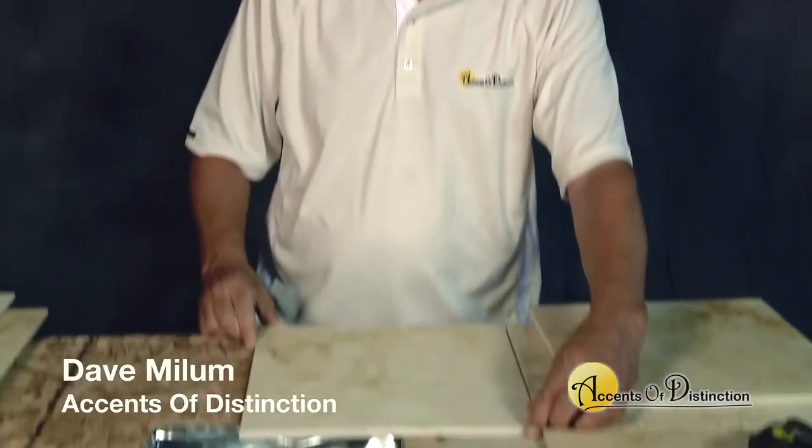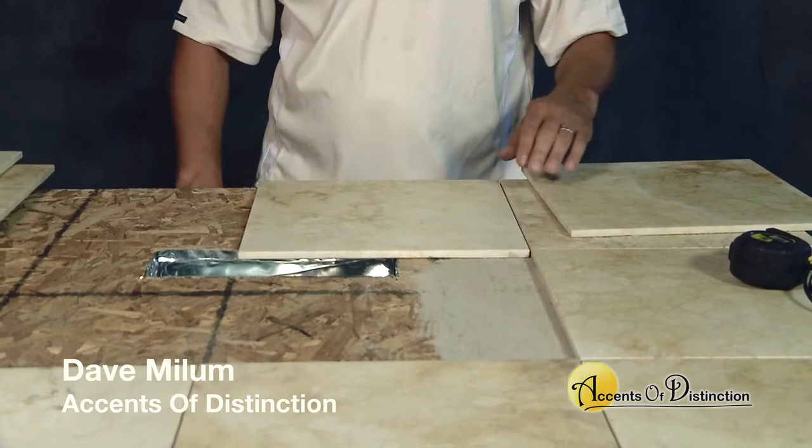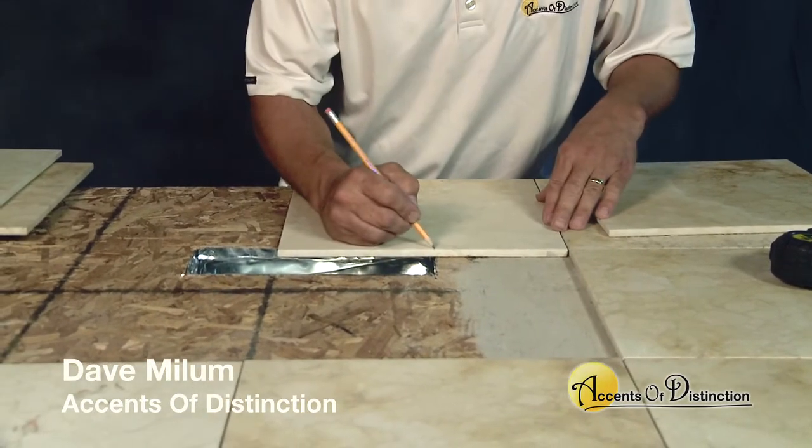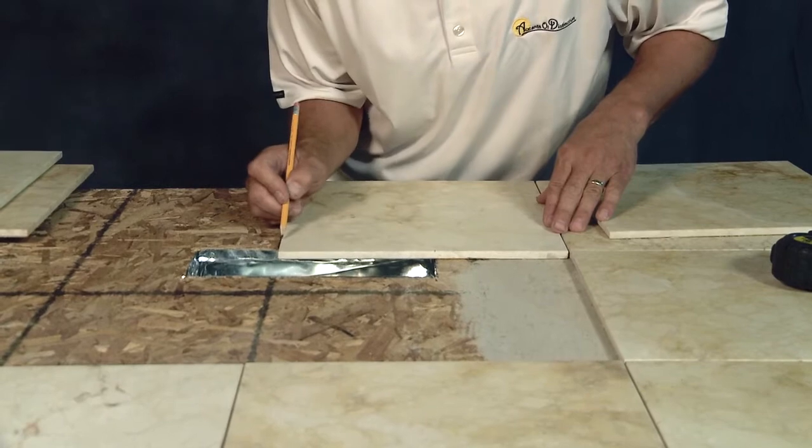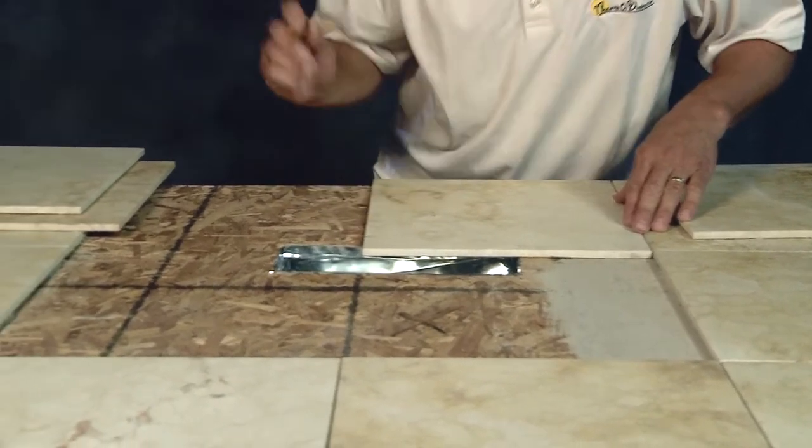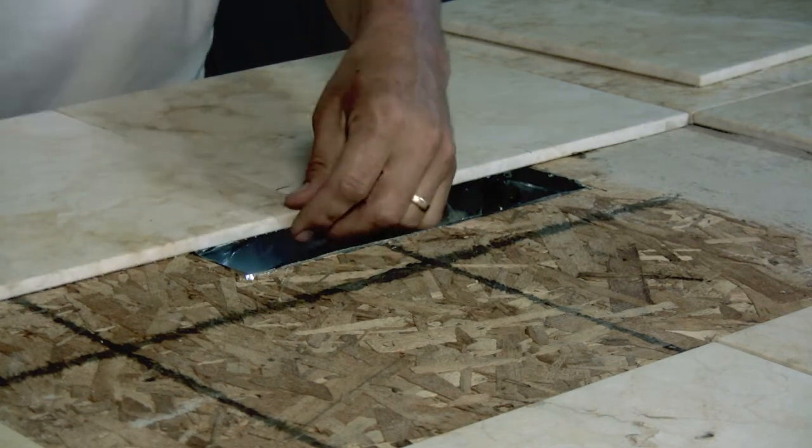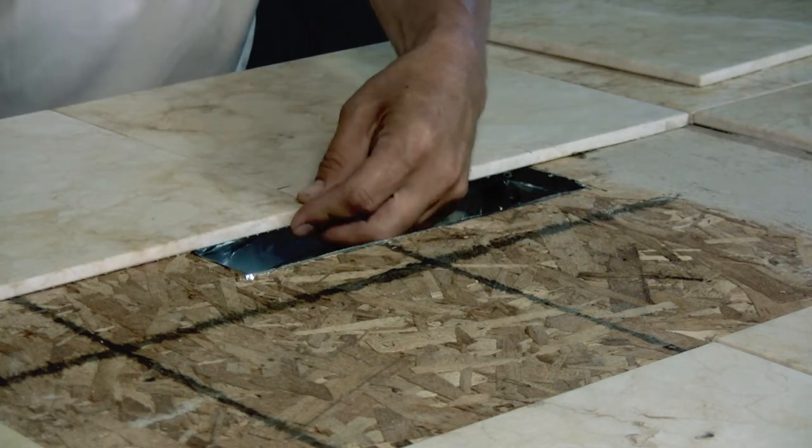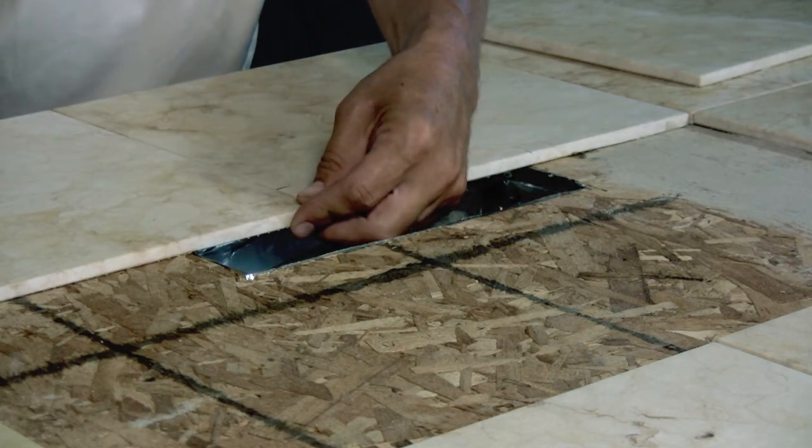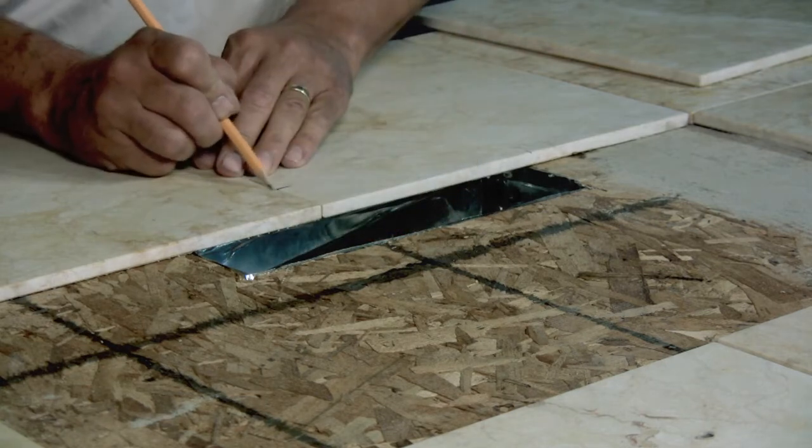Start by laying out your tiles and finding out exactly where the location of the opening of the vent is. Mark your tiles accordingly. Ensure that everything is square and true and your grout lines are lined up.